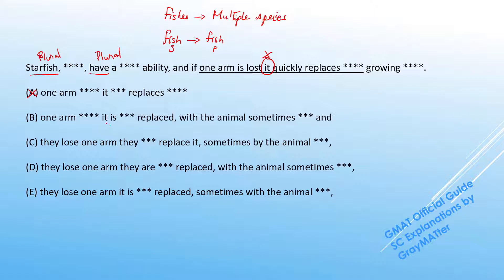Now in B, we do not have it replaces, we rather have it is replaced. And when you think about it logically, the arm is replaced. So this it is logically referring back to the arm and there is a proper matching number. So we can hold on to B.